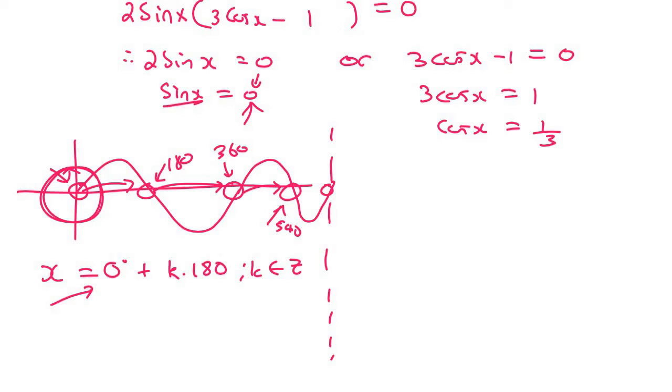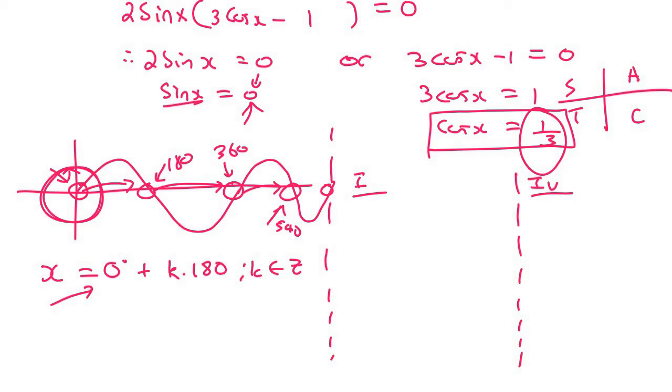Now for this one, we use the normal reference angle approach, and we know that there's going to be two quadrants, and it's where cos is a positive. So if I look on my cos diagram, I know that that's quadrant 4 and 1, where cos is positive. So I'll say quadrant 1, quadrant 4, and now we start.